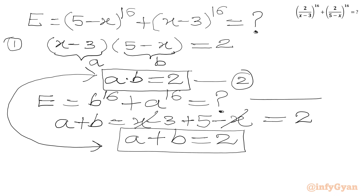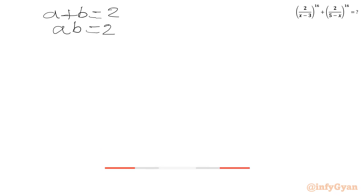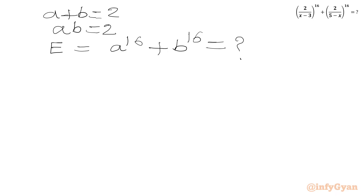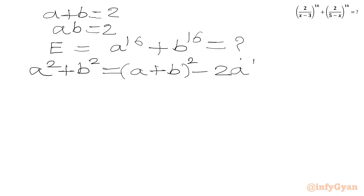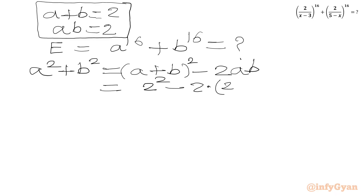To find a to the 16th plus b to the 16th, we use algebraic identities step by step. First, a squared plus b squared equals (a plus b) squared minus 2ab equals 2 squared minus 2 times 2 equals 4 minus 4 equals 0.